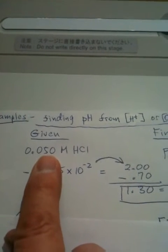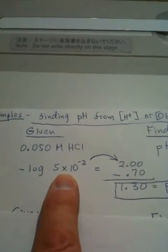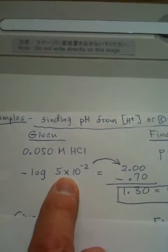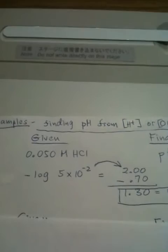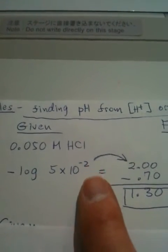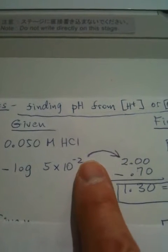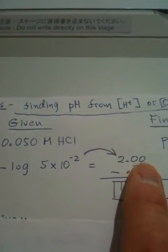Now, we're going to take this number, change it into scientific notation like we did in the last video, and we're going to take the minus log. So, if we take the minus log of this number, we start out by using the minus 2, change the sign, and make it 2.